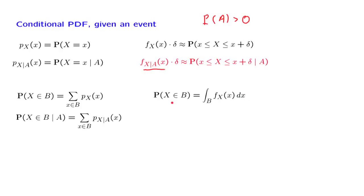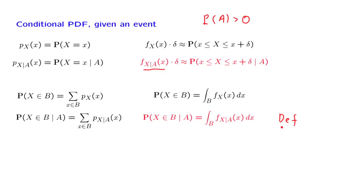In the continuous case, we use a PDF to calculate the probability that X takes values in a certain set. And by analogy, we use a conditional PDF to calculate conditional probabilities. We can take this relation to be the definition of a conditional PDF — a function that allows us to calculate probabilities by integrating over the event or set of interest.